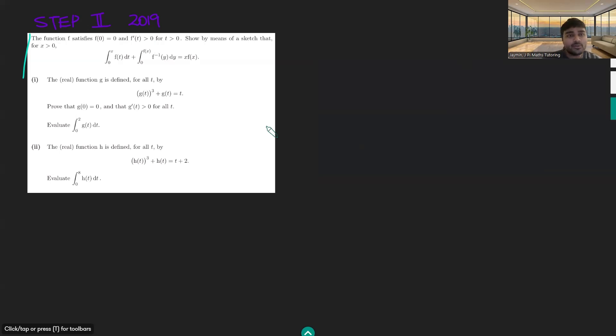So now for part one, of course, we want to use this result that we've got in part zero, this thing here. We've got this function g, which satisfies this. We first want to prove that g(0) = 0 and g'(t) is positive. This is pretty straightforward to do.